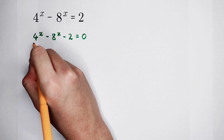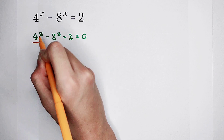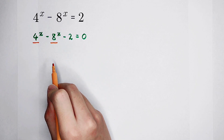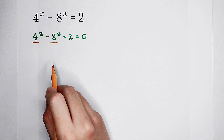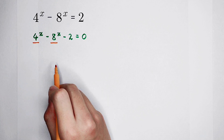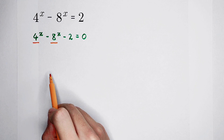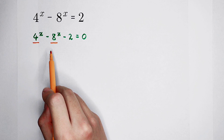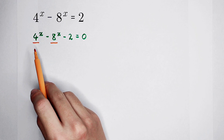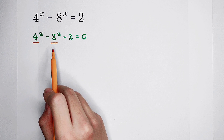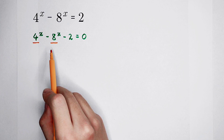This base is 4, and this base is 8. Maybe you want to say 4 times 2 is 8. However, it is not the main approach for us to solve this question. The really useful relationship between them is that 4 is 2 squared and 8 is 2 cubed — they are both integer powers of 2.